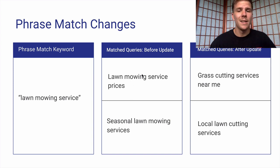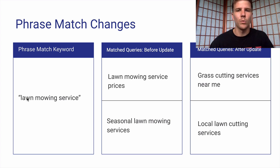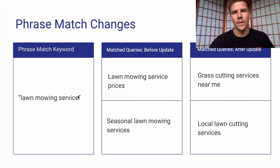Seasonal lawn mowing services — that's plural — so it's still going to show on that. Now this is before the update. Since the change, it's going to also allow for variations in the exact keywords within that phrase. So lawn mowing and service — any variation of each one of these words with the same intent — Google is fairly good at judging intent. It will show on 'grass cutting services near me' — grass replaces lawn, cutting replaces mowing. Local lawn cutting services — it'll also account for misspellings, which wasn't a thing beforehand with Phrase Match.